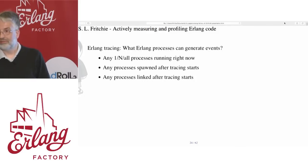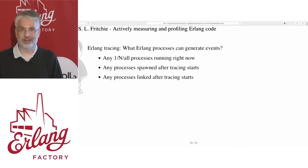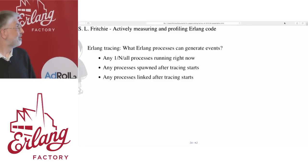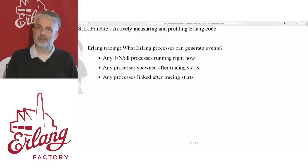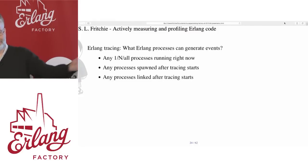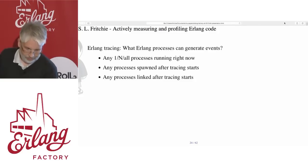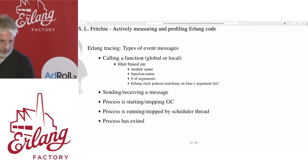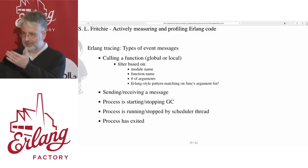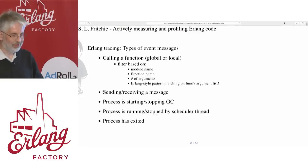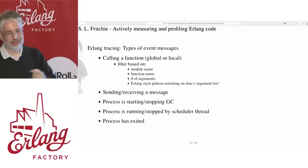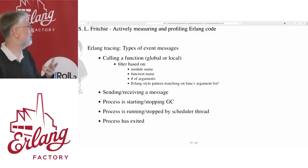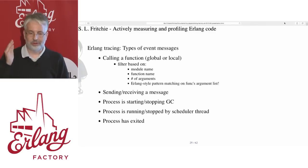I can choose any one process to trace, or some processes, or I can say trace them all — though there are problems with tracing all, and I'll talk about that. You also have the option of saying any processes that are spawned after tracing starts, or another variation if a process is linked after tracing starts. Some of the conditions for the source or producer: calling a function, whether it's a global inter-module or local intra-module call. You can also filter based on function name, module name, number of arguments, using Erlang-style pattern matching — match spec style matching.